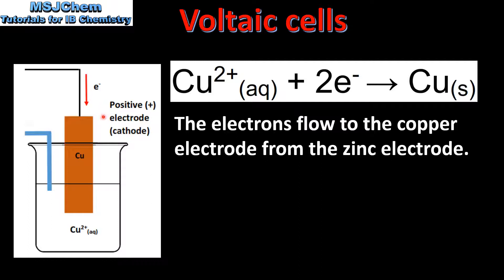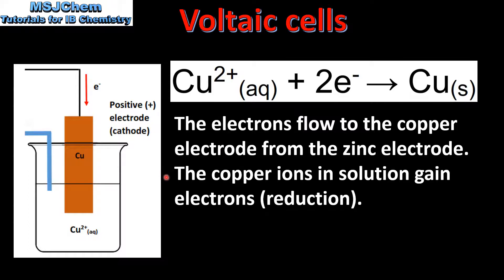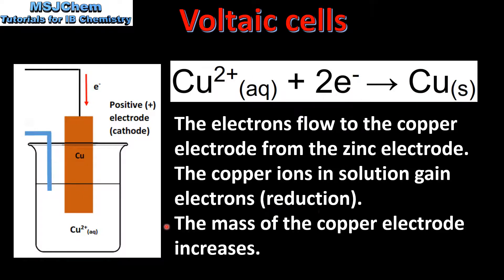Next we look at the reaction that occurs at the positive electrode or the cathode. The electrons flow to the Copper electrode from the Zinc electrode. The copper ions in solution gain electrons. In this equation, we have a Copper 2+ ion gaining electrons to form a copper atom, which is reduction. The mass of the copper electrode increases as copper ions are reduced to form copper atoms.